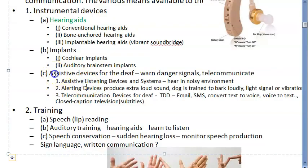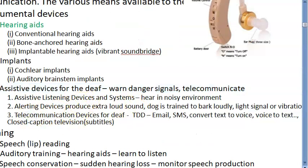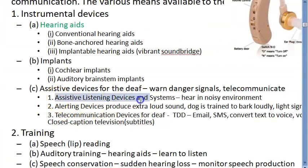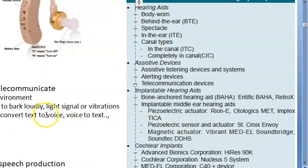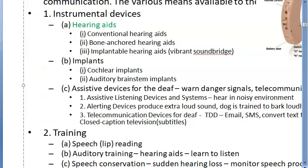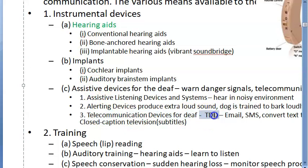Assistive devices basically warn the hearing impaired of dangers and help them telecommunicate with others. You can give them a device to hear in a noisy environment, or alerting devices that produce extra loud sounds. For example, a light signal can flash when the doorbell is pressed instead of a sound, or a phone can be set to vibrate when they can't hear the ringtone.